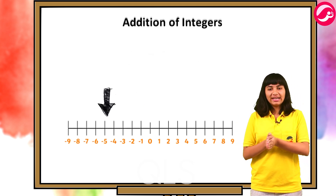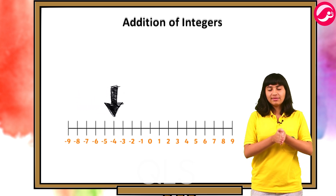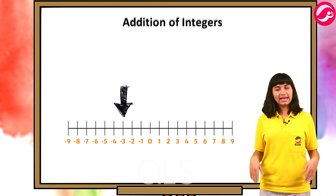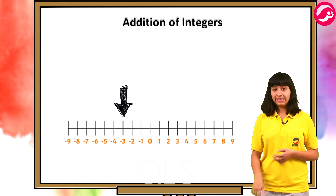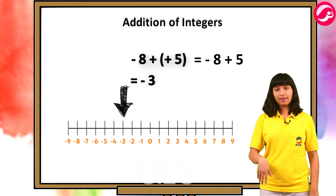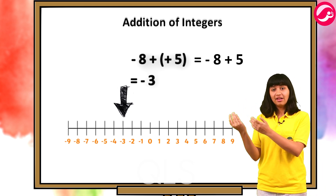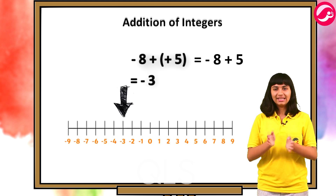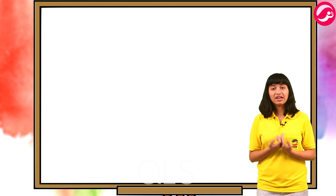Go eight steps down from the ground level and then go five steps up from there. Mein eight steps neeche utari — minus eight — phir meinne plus kiya five steps upar chadhna — plus five. Toh minus eight plus five — mera answer aaya minus three.